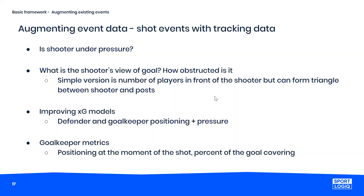You can do similar things with shots: was the shooter under pressure, what was the shooter's view of goal, how many players were in the triangle from the shooter to each post. This improves expected goals models. Most importantly, you can build better goalkeeper metrics — where the goalkeeper was at the start of the shot, what percentage of the goal they were covering, their position at the moment of the shot, and their reaction time — all from augmenting the shot event itself.